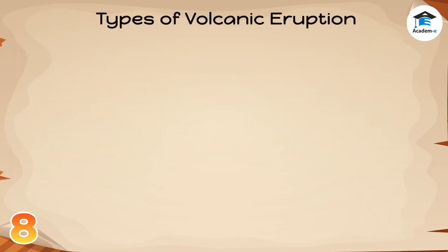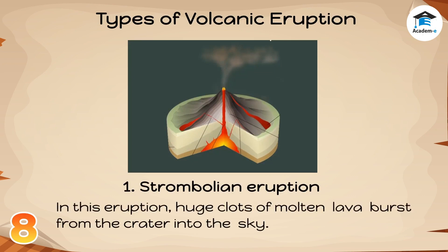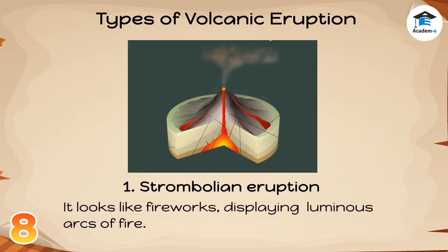Types of Volcanic Eruption. 1. Strombolian Eruption: In this eruption, huge clots of molten lava burst from the crater into the sky. It looks like fireworks, displaying luminous arcs of fire.